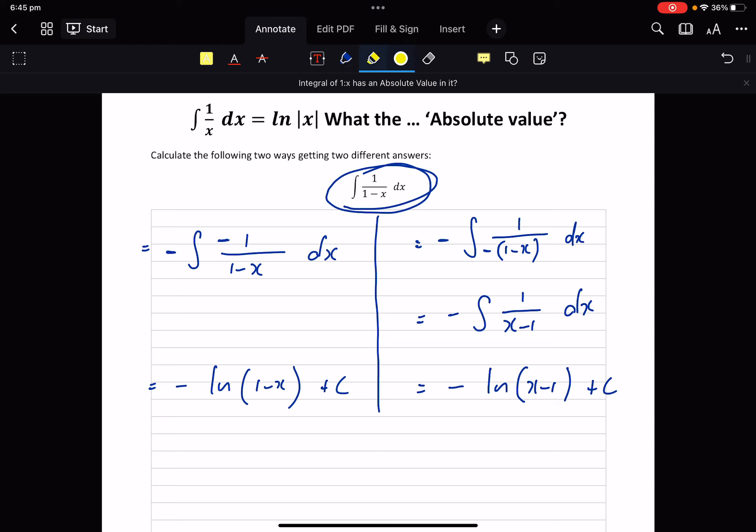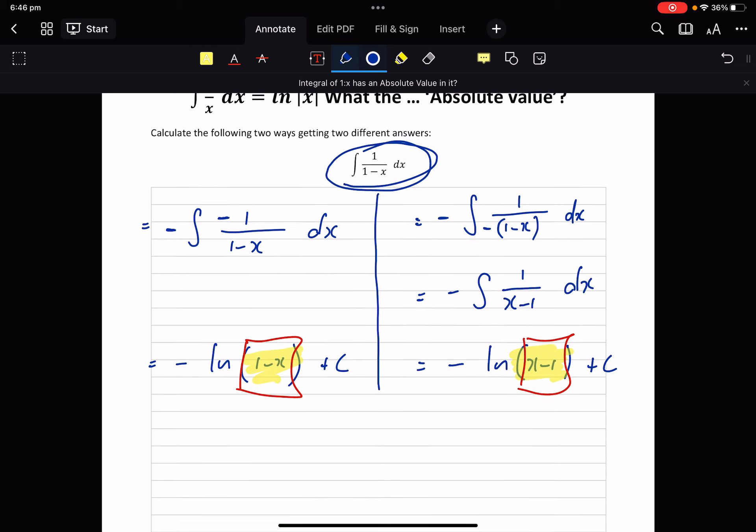Clearly both answers need to be the same. There is only one answer in maths, therefore 1 minus x and x minus 1 has to be the same thing, otherwise we've broken maths. What's the only way that we can get 1 minus x and x minus 1 to represent the same value so we get the same answer? Absolute value.